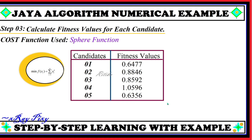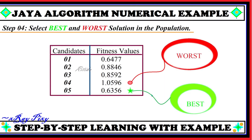In step 3, we will calculate the fitness value for each candidate. We will use a fitness function — also called a cost function or objective function. Right now, we are using the sphere function to calculate the fitness value for each candidate.